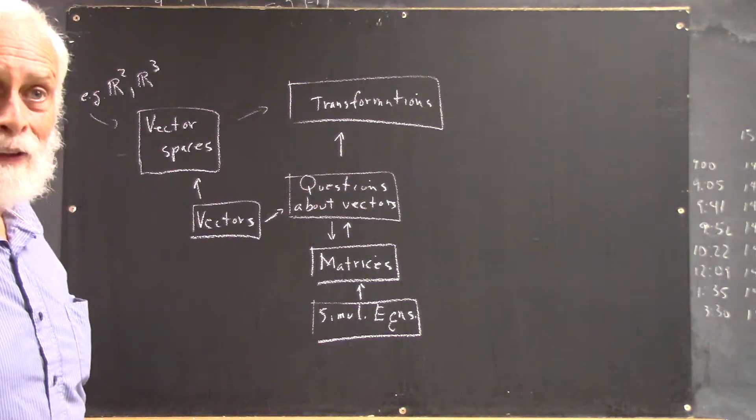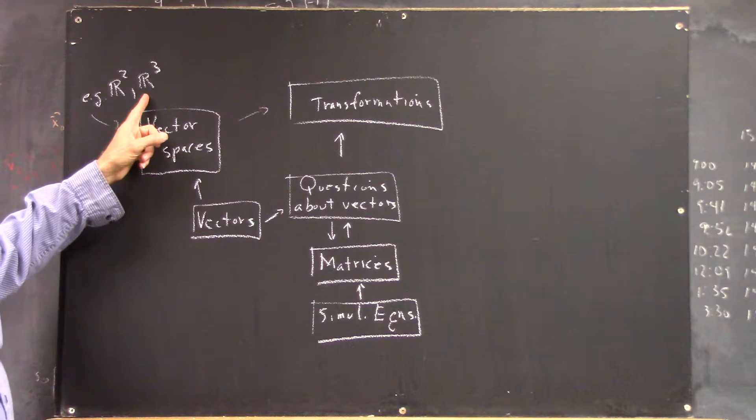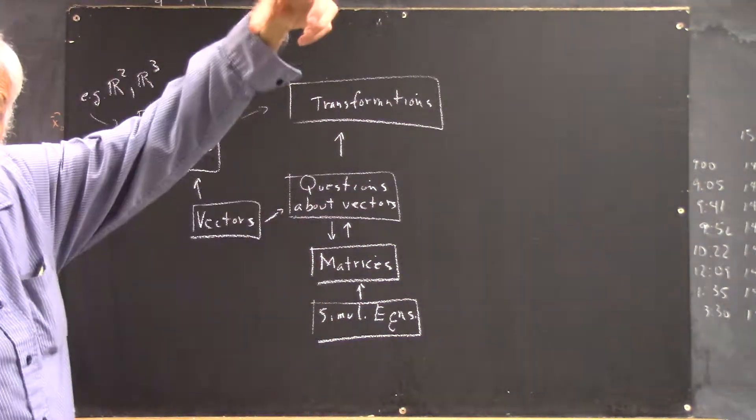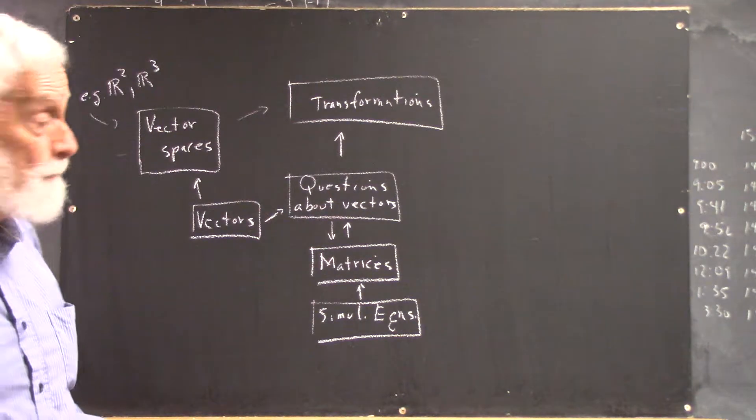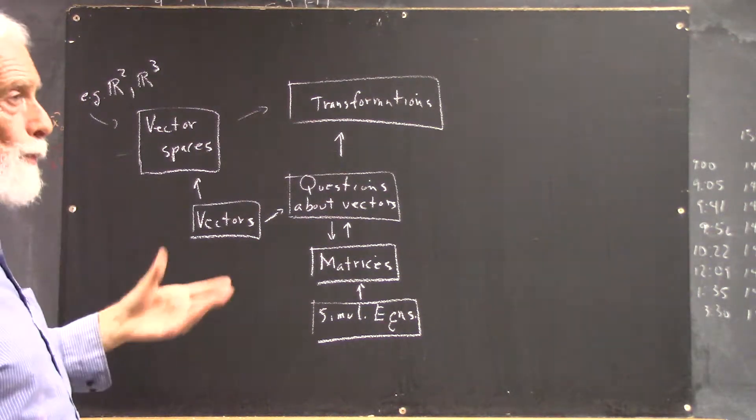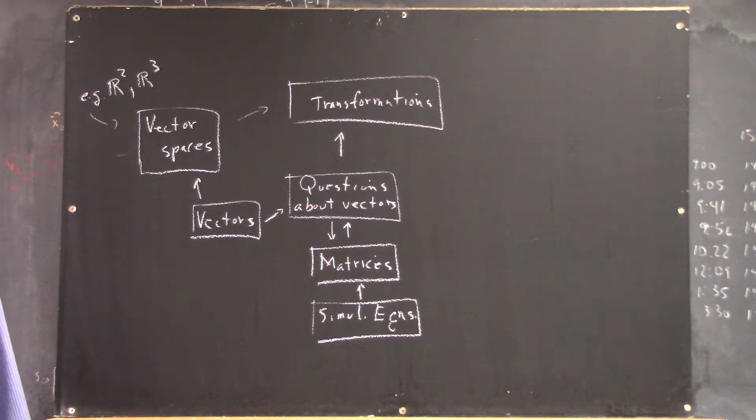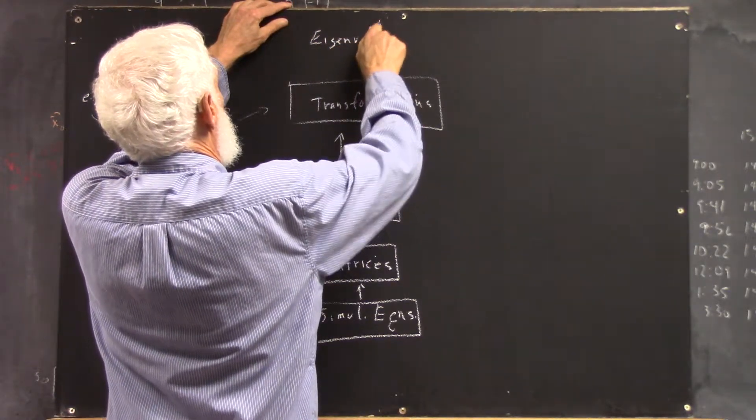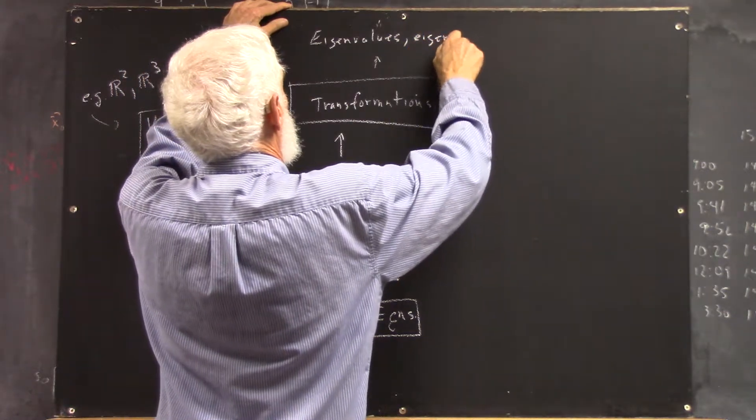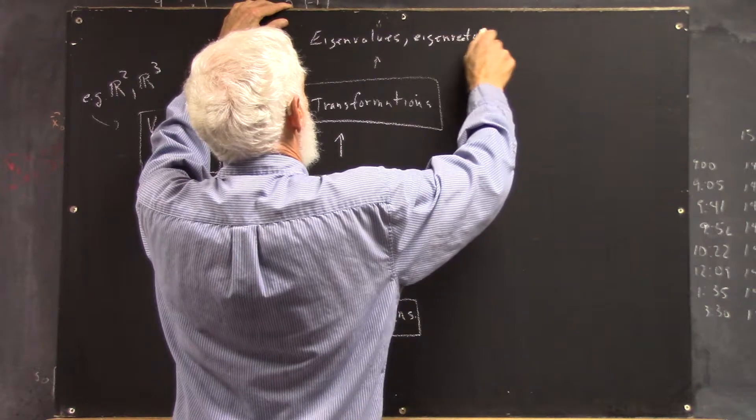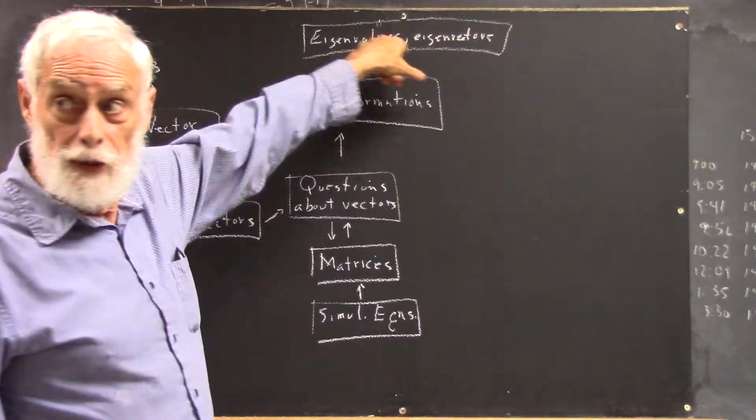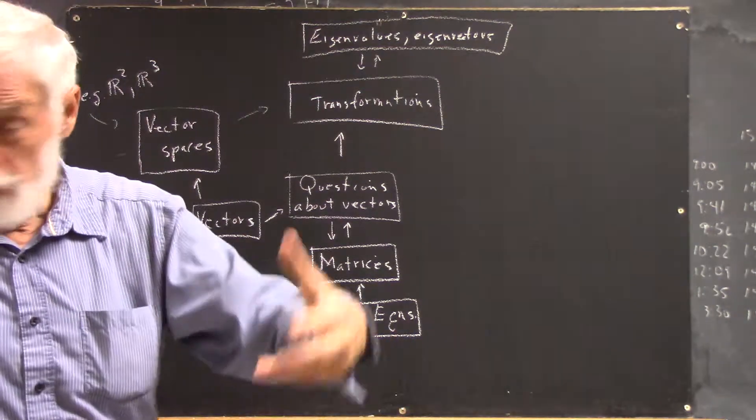So if you learn everything we can do in R3, then you can pretty much do it in R14, just got bigger matrices and longer vectors. And then as one application of all this, we looked at eigenvalues and eigenvectors. So once you understand transformations, you can understand what eigenvectors are and eigenvalues.